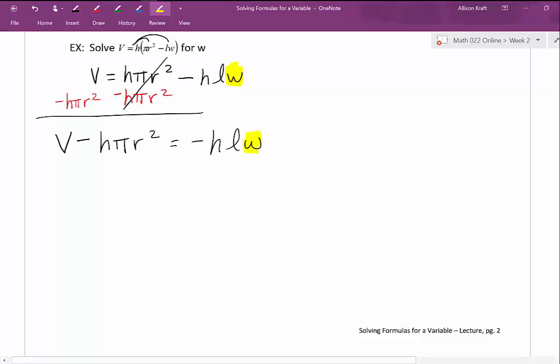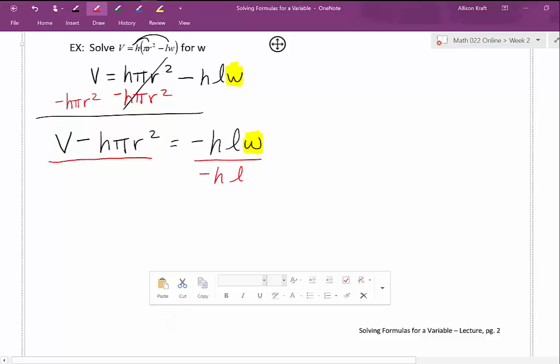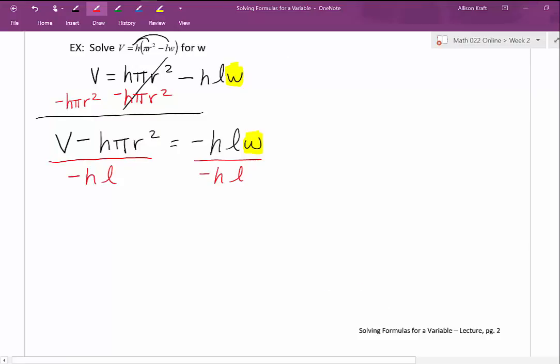To get W by itself, I need to get rid of the H and the L. The operation between the negative HL and the W is multiplication. So to get rid of it, we'll do the opposite operation. We'll divide. A common mistake is that people want to add HL to both sides because they see that negative sign. Make sure you pay attention to what the operation is between those variables and the variable you're solving for. We end up with V minus HπR² divided by negative HL equal to W.